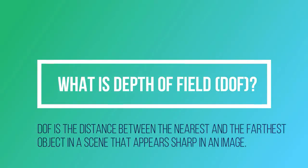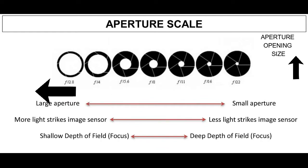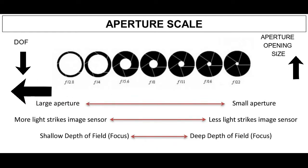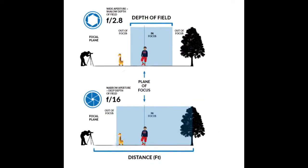Depth of field is the distance between the nearest and the farthest object in a scene that appears sharp in an image. As you can see, when I change my aperture, my depth of field also changes. As my f-stop value goes down, aperture size goes up and my depth of field decreases, and vice versa.